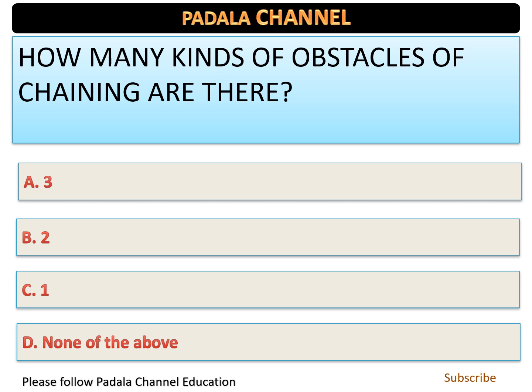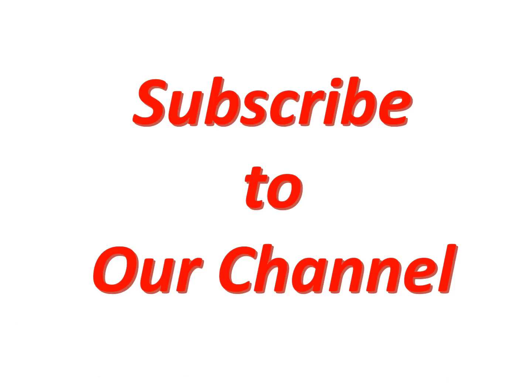How many kinds of obstacles in chaining are there? Options: A — three, B — two, C — one, D — none of the above. Please comment your answer below — individual replies will be given. Please subscribe to our channel for encouragement. Thank you for watching.